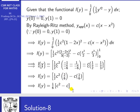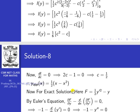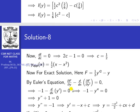To find the extremal solution, set di/dc = 0: 2c − 1 = 0, so c = 1/2. Therefore the approximate solution is y-approximate = (1/2)·x·(1 − x) = (1/2)(x − x²).